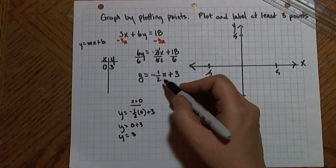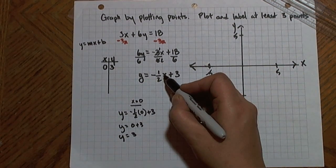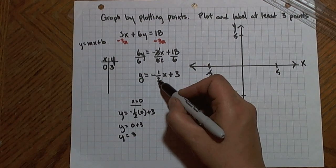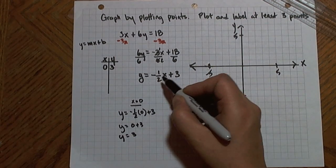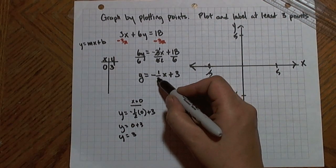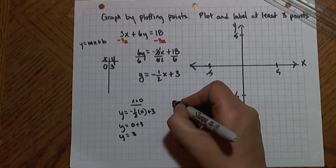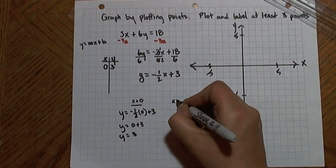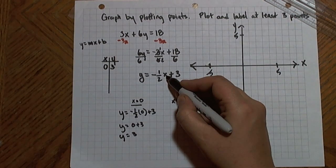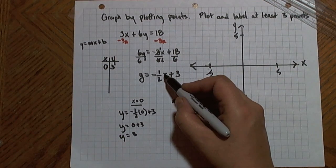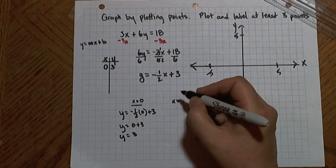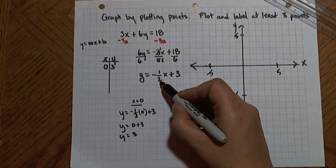So now I need another point. I could put in one for x, but I notice that I'll be multiplying one half by one. I'll get a fraction, and I'll have to add that to a whole number. And if I could eliminate the fraction, it would probably make it just a little simpler for my graphing. So since I get to choose, I'm going to pick a value for x that is going to clear that fraction, so it would be anything that has a multiple of 2.